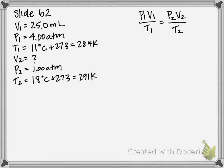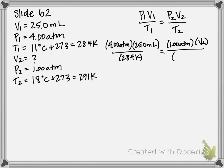So now we can start plugging these into our equation. So our P1, 4 atmospheres, V1, 25 milliliters, over T1, 284 Kelvin. We set that equal to our P2, which is 1 atmosphere, times V2, that's what we're looking for, all over T2, which is 291 Kelvin.